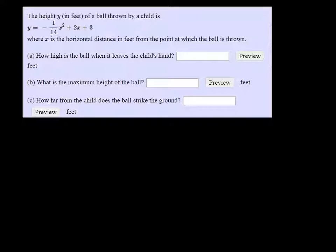How high is the ball when it leaves the child's hand? So that's at time 0, so you're just plugging 0 in for x, and when you do that, the first two terms get wiped out, and you just get 3, so 3 feet.